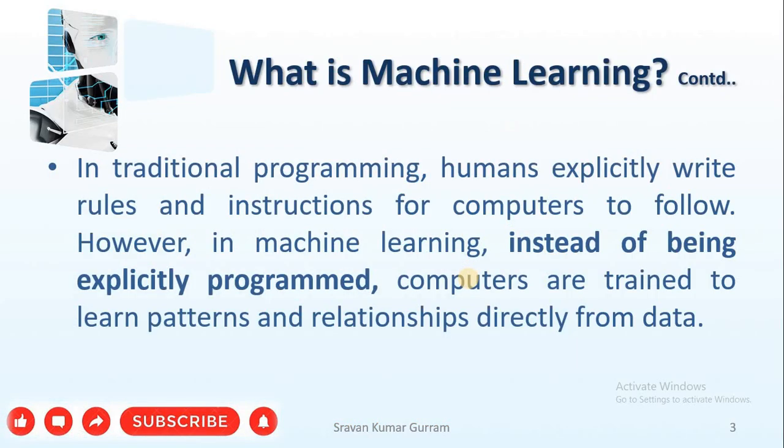Let us try to understand the definition. Coming to the traditional programming, humans explicitly write the rules and instructions for computers to follow. However, in machine learning, instead of being explicitly programmed, computers are trained to learn patterns and relationships directly from the data.